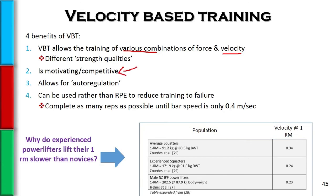VBT can also be very motivating because you get rep-by-rep feedback. For example, you might have moved 150 pounds at 0.8 meters per second in one set and want to hit 0.85 in the next. Or if training with a partner of similar ability who moved it at 0.8 meters per second, you might push yourself to 0.9.